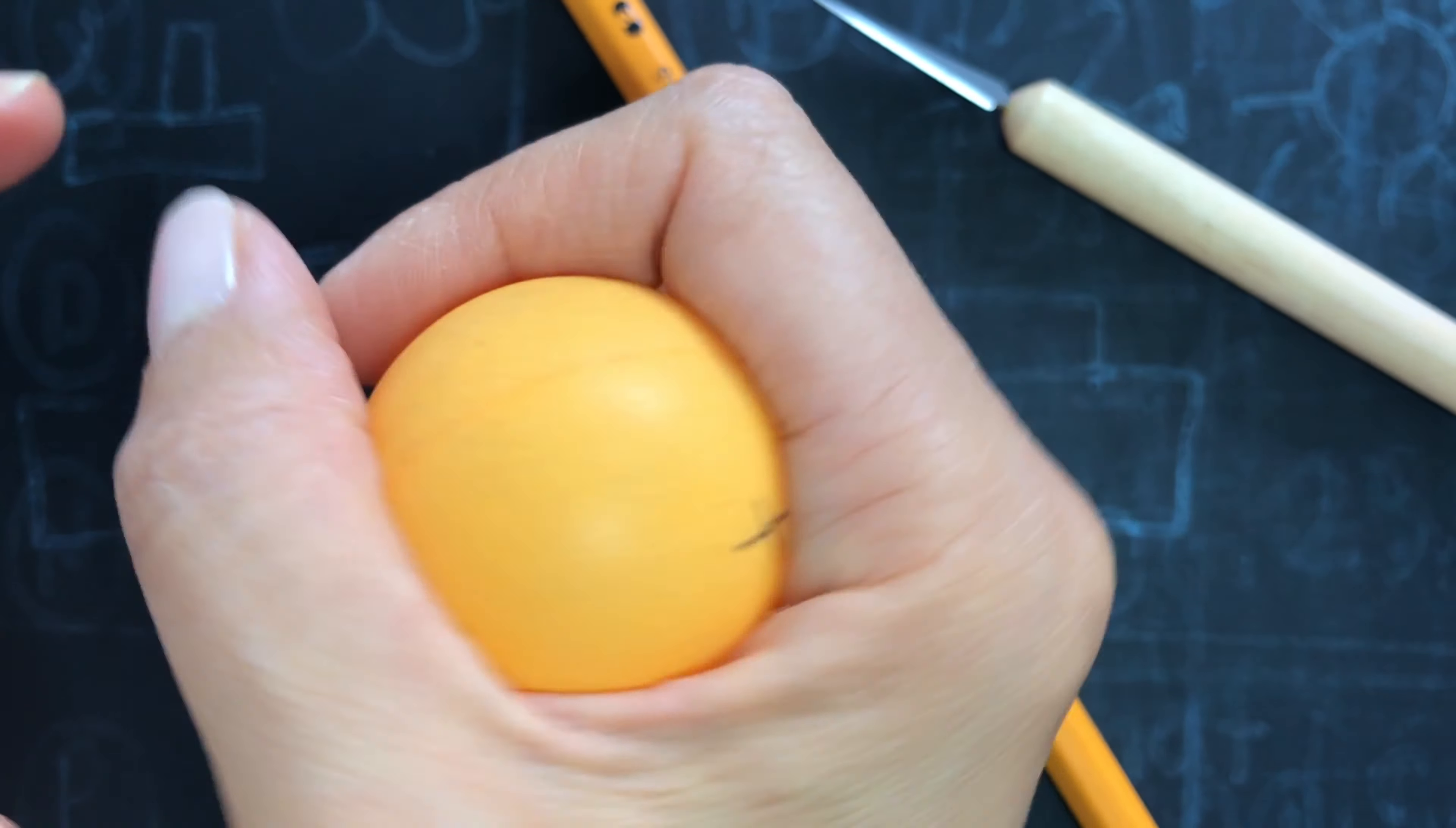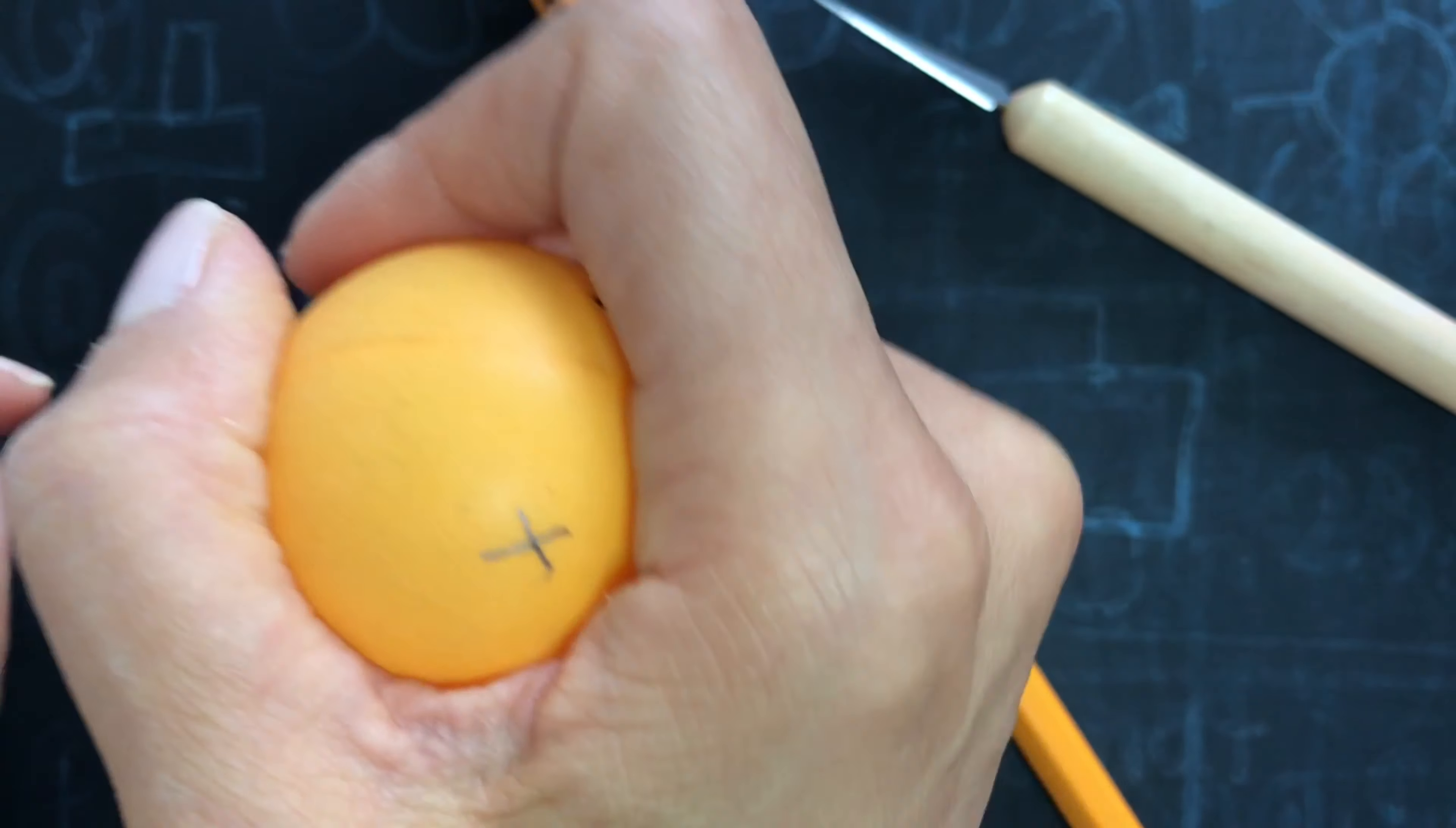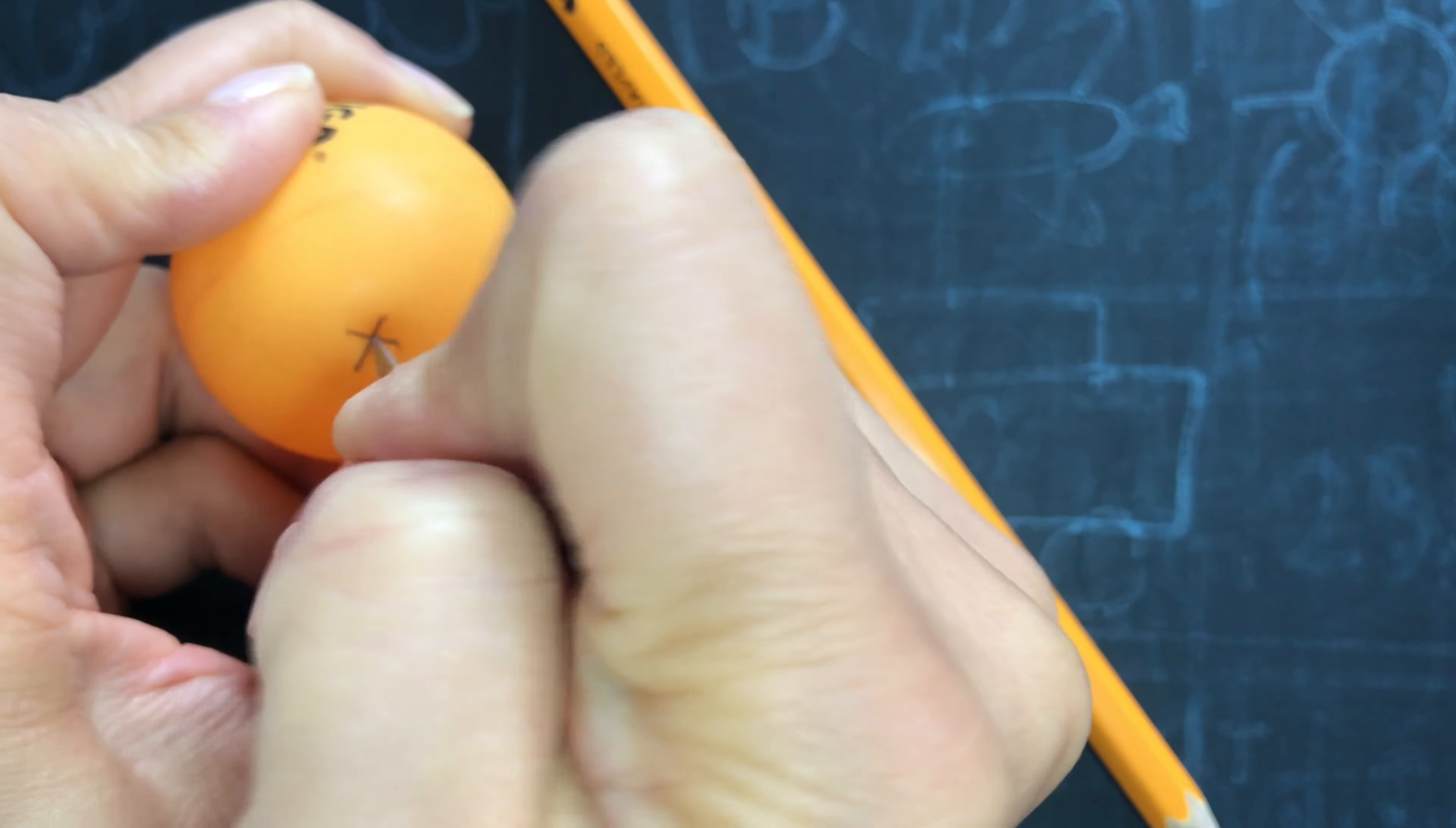Okay, so this way. If the pencil goes one hole, the other one will come out the other side. Be careful when you puncture.